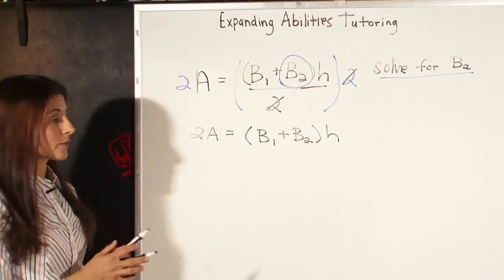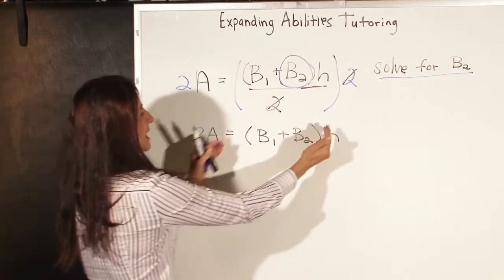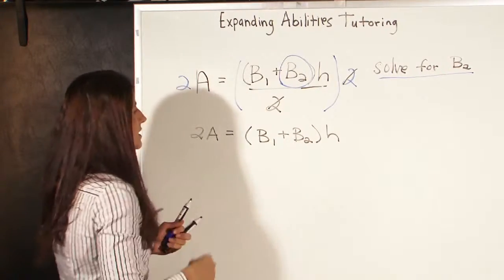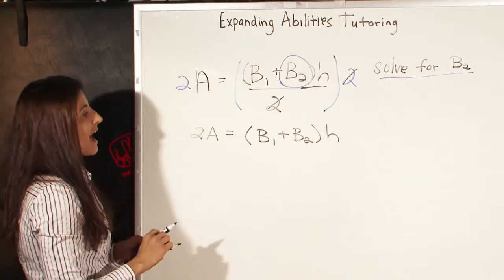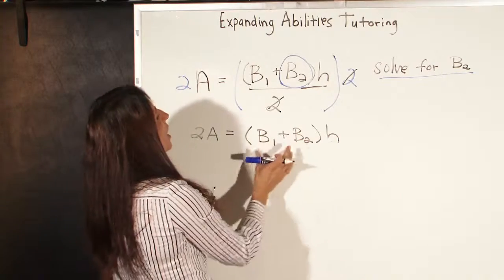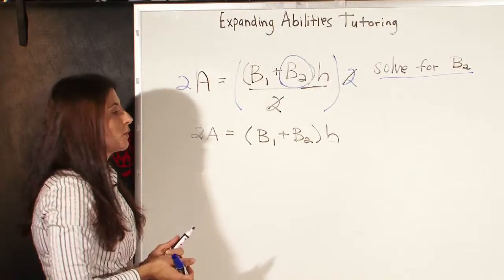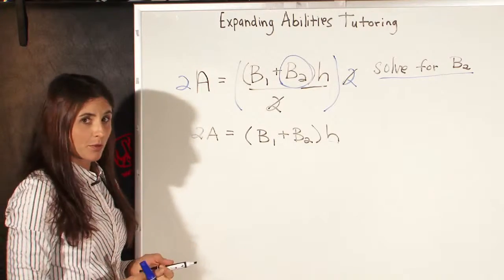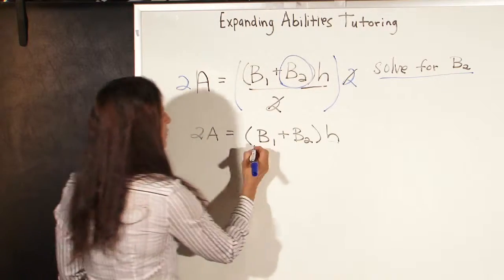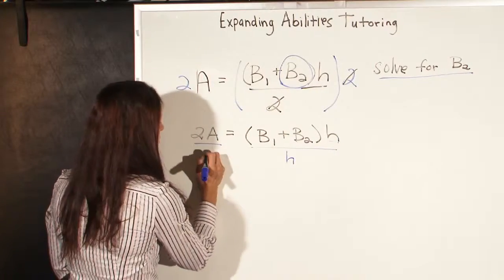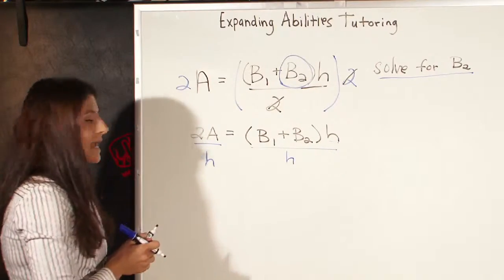The next thing we want to do is work from the outside of the parentheses in. Outside of the parentheses on the right-hand side, we have an H, and we want to make this H go away. The H is being multiplied by the sum of B1 and B2. So in order to get rid of something that is being multiplied, we do the opposite of that, which is division. So we're going to divide both sides of the equation by H.